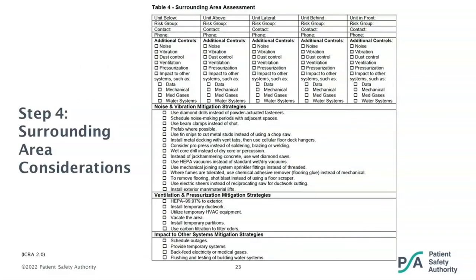The tool gives space to consider several surrounding areas and items such as noise, vibration, dust control, ventilation, pressurization, and impact to other systems. If any of these items are determined to be an impact during your project, mitigation strategies are also listed. After you've completed all four steps, you're ready to move on to putting the recommended mitigation strategies into place.